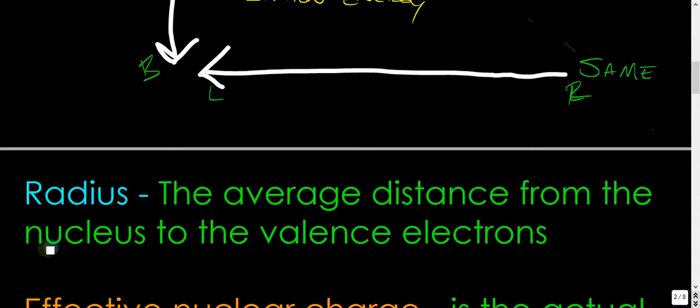And let me pop down some definitions real quick. The radius is the average distance from the nucleus to the valence electrons.